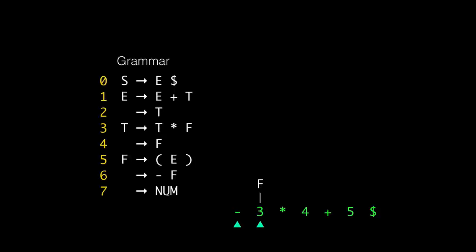Every time we do a reduction, we're going to fire an action — everything happens in this backwards order. We then do another reduction: we have minus F, which is the handle, and that matches the right-hand side of production six, so we reduce minus F back to an F. Then F becomes the handle matching production four, which we reduce back to a T. The parser then sees the asterisk and shifts it, then sees four and shifts it. Four, which is a num, gets reduced to F based on production seven.